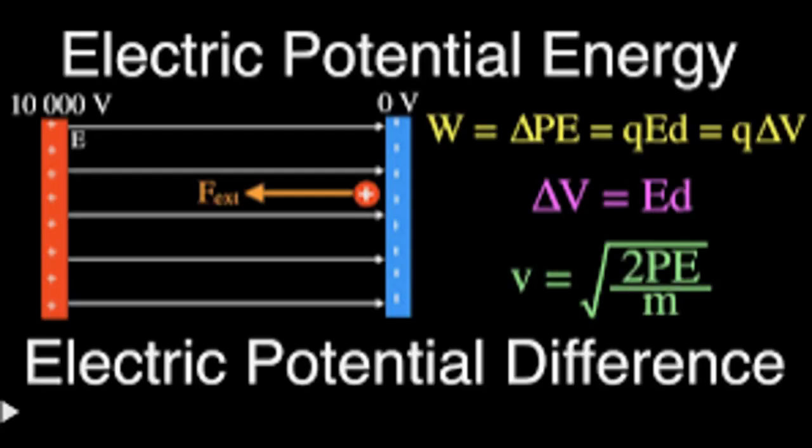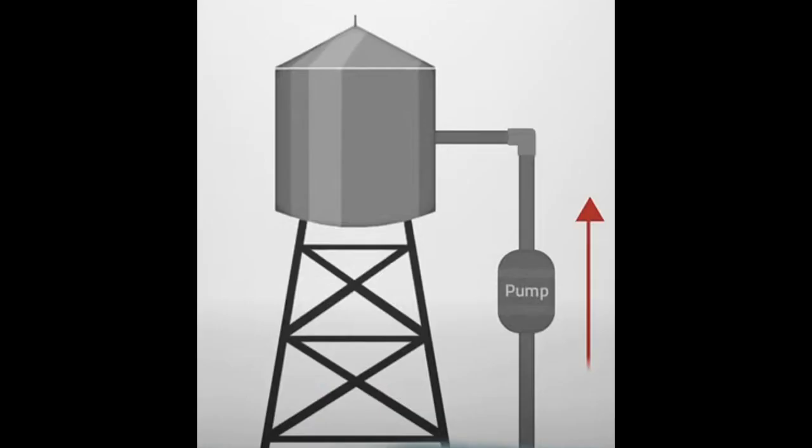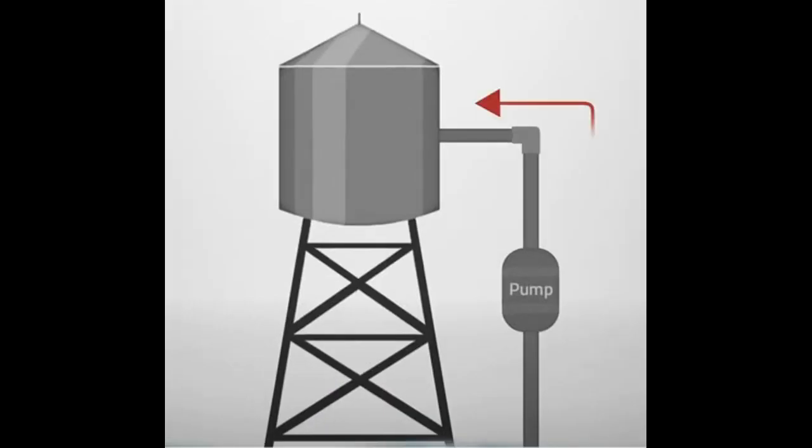As we know that the difference in electrical potential energy per unit of charge between two points, let's understand with example of elevated water tank.